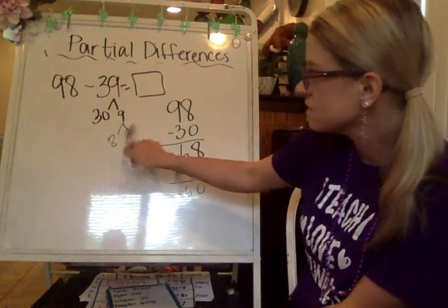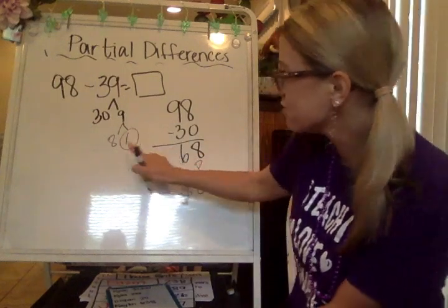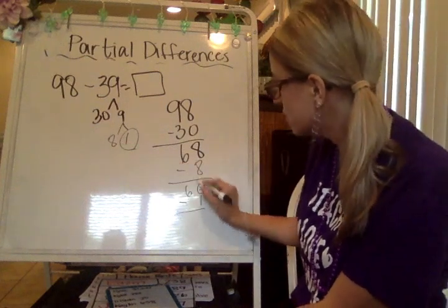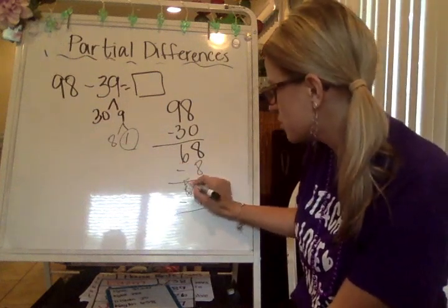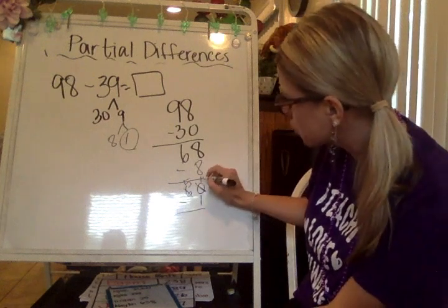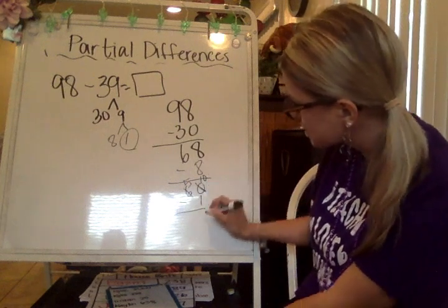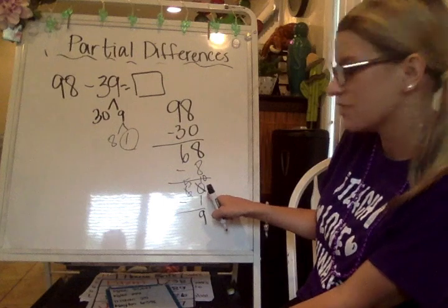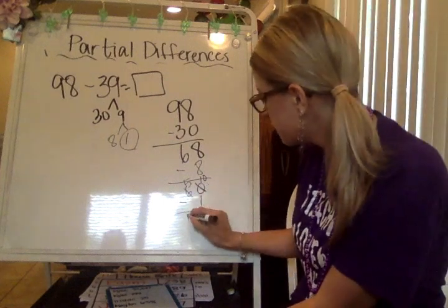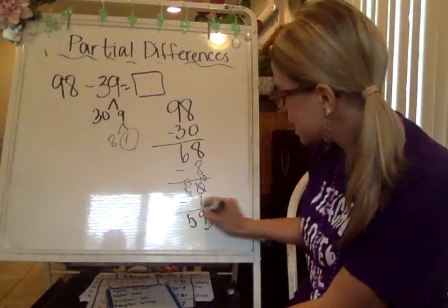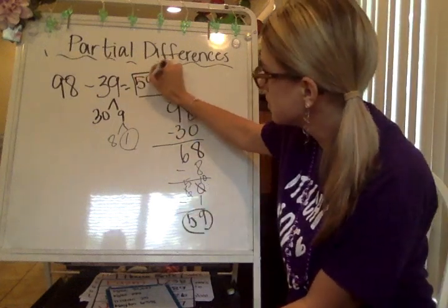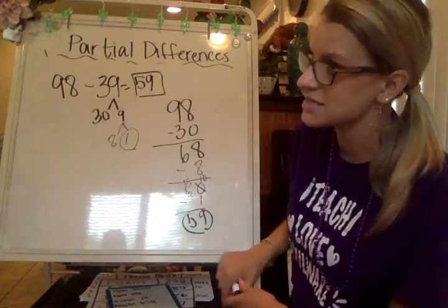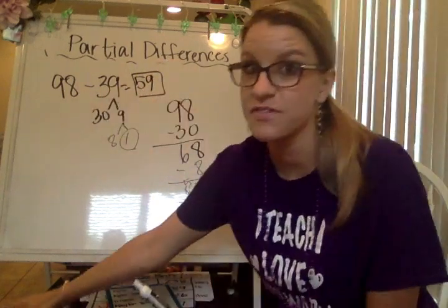So 68 minus 8 is 60. The last one that I have left is 1. 60 minus 1 — that's something I'm able to do in my head. But if you have to show your work for this, borrow a 10 and do that regrouping. So 59 is the difference. 98 minus 39 has a difference of 59.